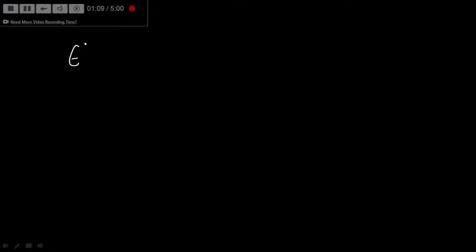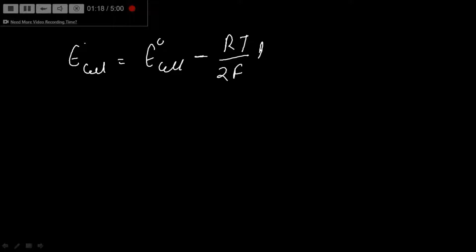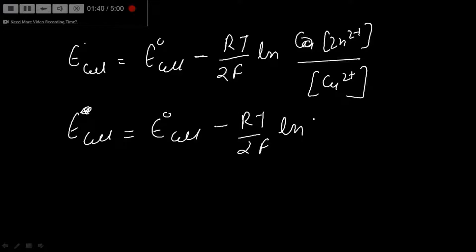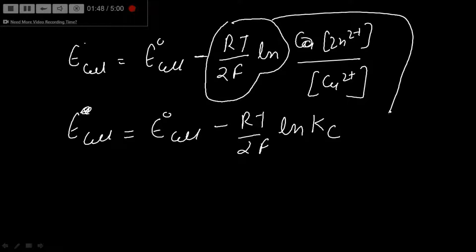So from the Nernst equation, E_cell = E°_cell minus (RT / 2F) ln(Kc). We can replace the concentration ratio with Kc. This gives a direct relationship between cell potential and the equilibrium constant.